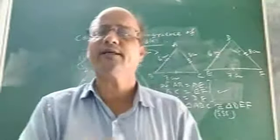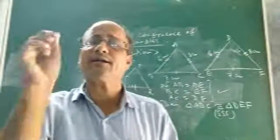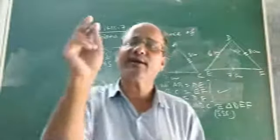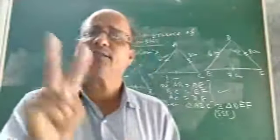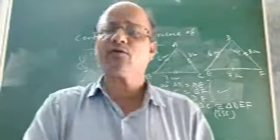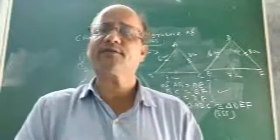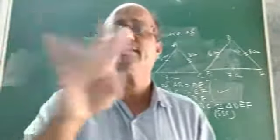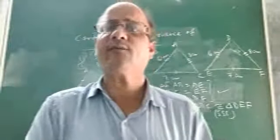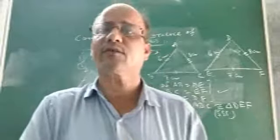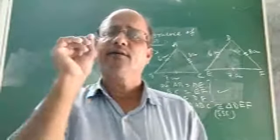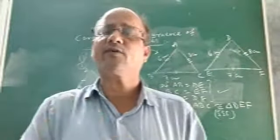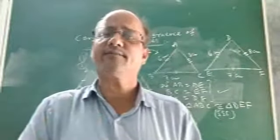So what are the other criteria by which we can decide that two triangles are congruent? Today let us discuss. Children, there are four criteria. What are they? One is side-side-side congruence condition.